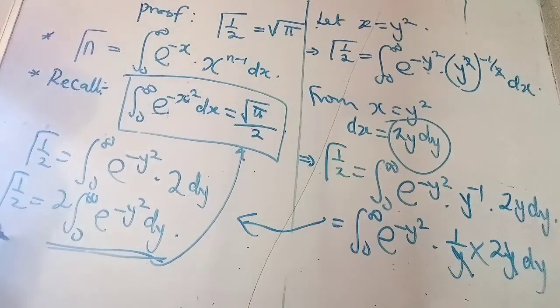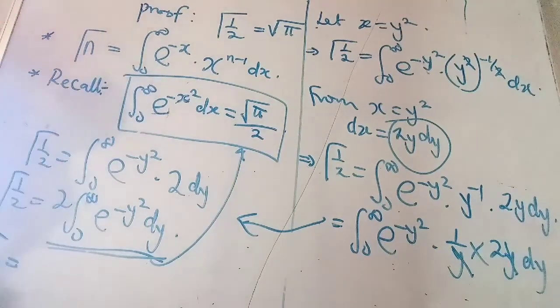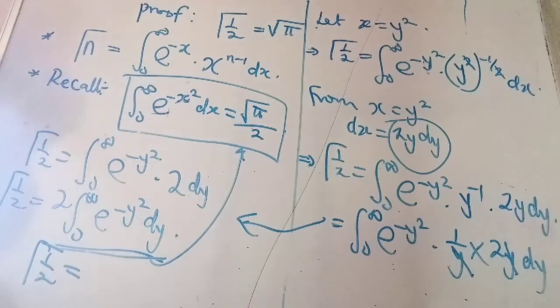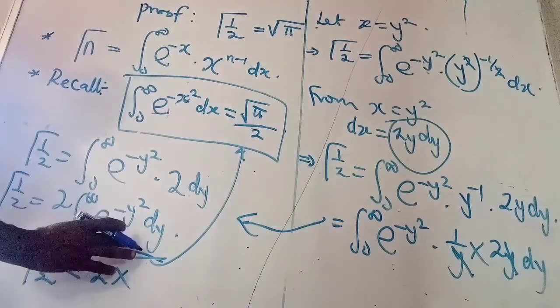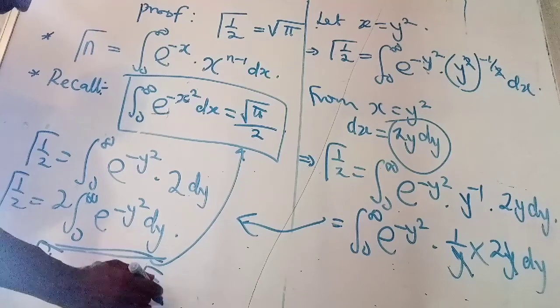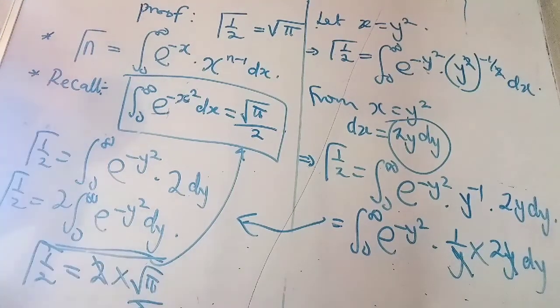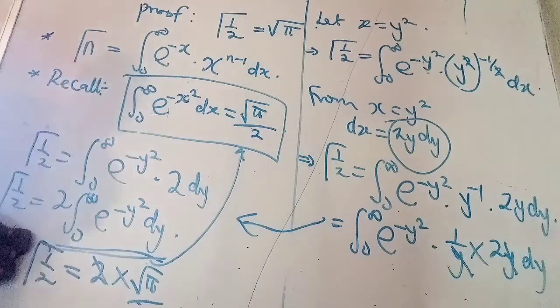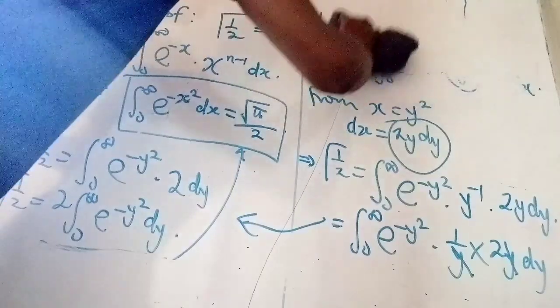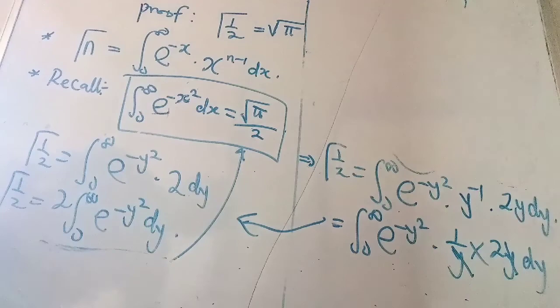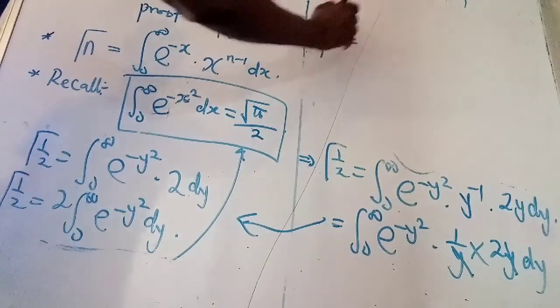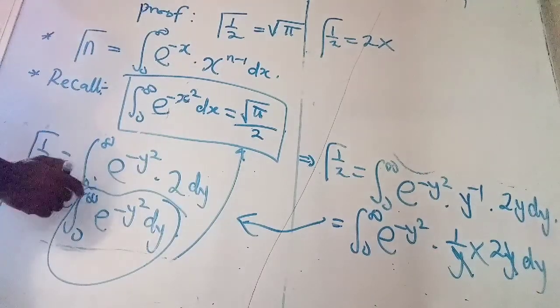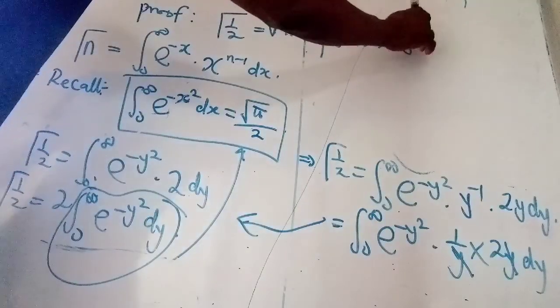So, meaning that gamma of half now will be equal to 2 times, instead of writing this, we will now substitute with this, which is square root of pi over 2. I think I need to create more space here. All right. So, I'll bring in this now. That's gamma of half equals to 2 times the whole of this integral will be replaced with square root of pi over 2.